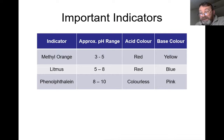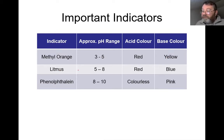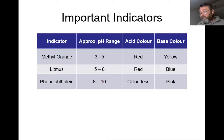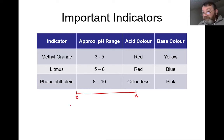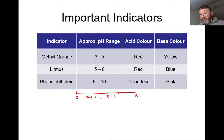Those values are the pH ranges in which these three chemicals show their various colors. Methyl orange in a solution of pH 3 or less is red; pH 5 or greater, yellow. Litmus in a solution of pH 5 or less is red; pH 8 or more, blue. Phenolphthalein below pH 8 is colorless; above pH 10, it's pink. On the pH scale from 0 to 14: roughly 3 to 5 is methyl orange, 5 to 8 is litmus, and 8 to 10 is phenolphthalein.